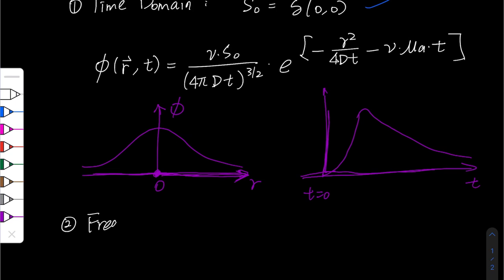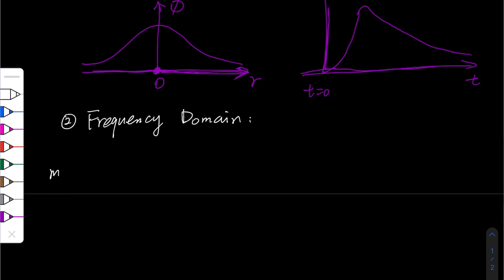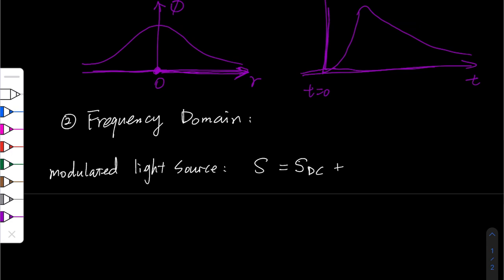The second case is the frequency domain system. In a frequency domain system, we have a modulated light source. That means the source is composed of two parts: the DC part, which doesn't change over time, and the AC part, which oscillates at some angular frequency omega. Since the light source is the sum of two parts, the photon fluence can also be expressed as two parts — the DC part and the AC part.